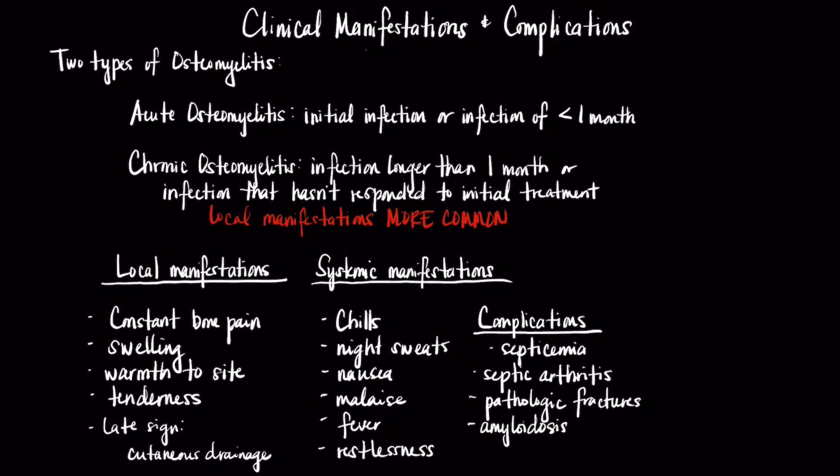Other local manifestations include swelling and warmth to the area of infection, tenderness, and drainage to the area, which is a late sign. Systemic manifestations are more general signs and symptoms of infection such as chills, night sweats, nausea, malaise, fever, and restlessness. In contrast, chronic osteomyelitis refers to any infection that has yet to resolve, is refractory to therapy, or lasts longer than a month.